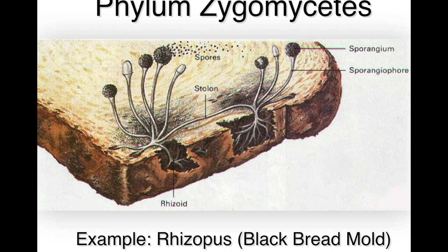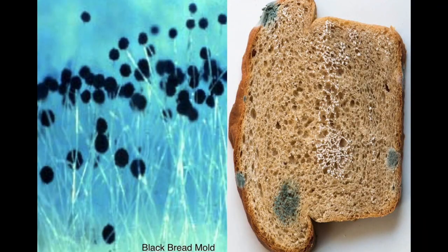The first phylum is phylum Zygomycetes. An example is black bread mold, or Rhizopus. You can see the aerial hyphae, the spores, and the connection between them is called a stolon. Here's the black bread mold — you can see the hyphae, the little fibers, and then the black fruiting body or black sporangium.